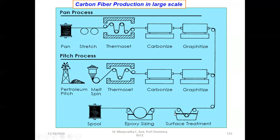The carbon fiber surface is then subjected to surface treatment, washed with a suitable solvent, and the surface is coated with epoxy. Then it is made in the form of fiber. This is how carbon fiber is manufactured using PAN. The process is the same when using petroleum pitch — the petroleum pitch is melted, drawn in the form of fibers, and the remaining process is identical.